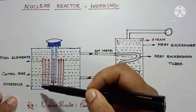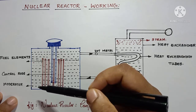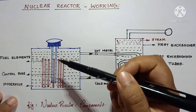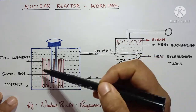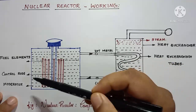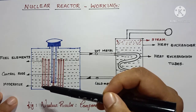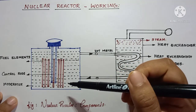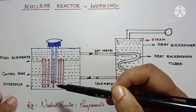The third important component is the moderator. The fuel elements and control rods are placed inside this moderator. These dotted portions indicate the moderator. The major function of this moderator is to reduce the speed. Normally, ordinary water or heavy water can be used as the moderator in nuclear reactors.